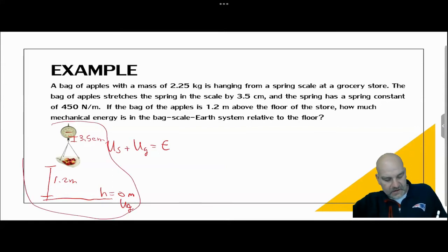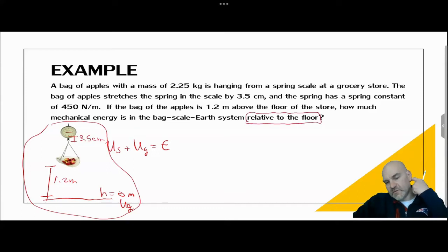And they're saying that the system is everything. And so if the system does not include everything, that changes our calculation just a little bit. And they tell you the reference point. They tell you relative to the floor, which is why h is equal to zero at the floor.